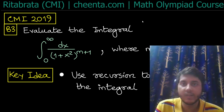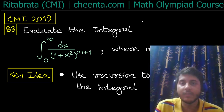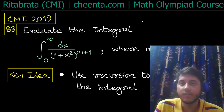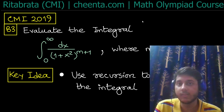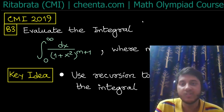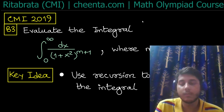In this video I want to focus on the method of using recurrence relations to solve definite integrals. If you have a definite integral that involves a power involving natural numbers in some way, you can use recursions to solve that. The question asks us to evaluate the integral from 0 to infinity of 1/(1+x²)^(m+1) dx.